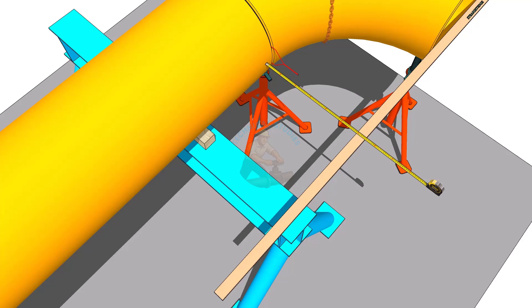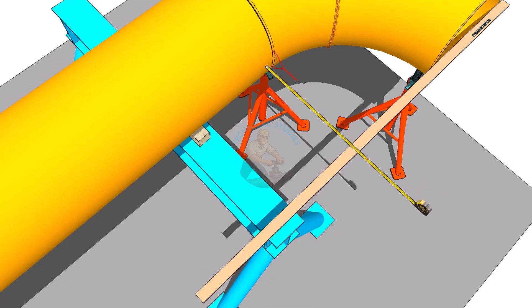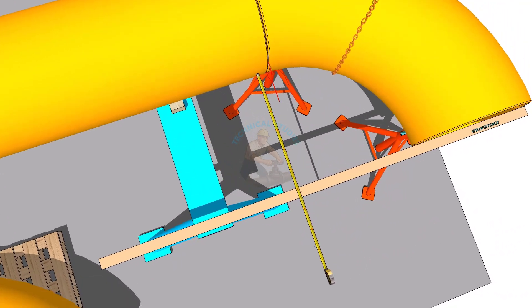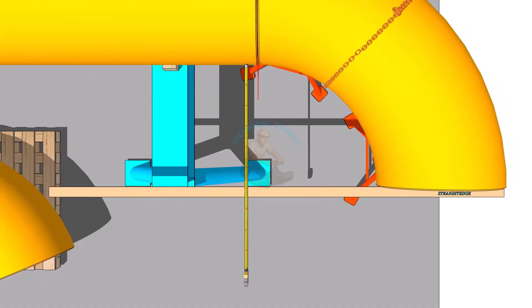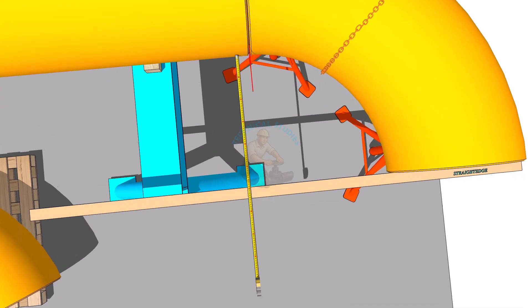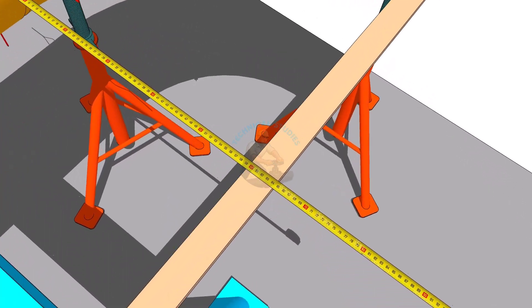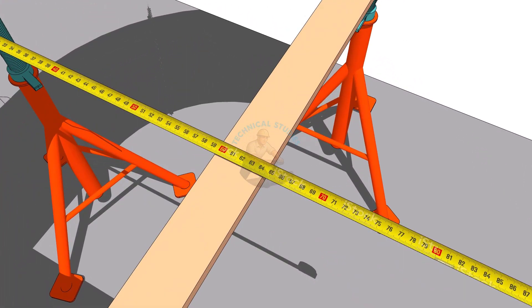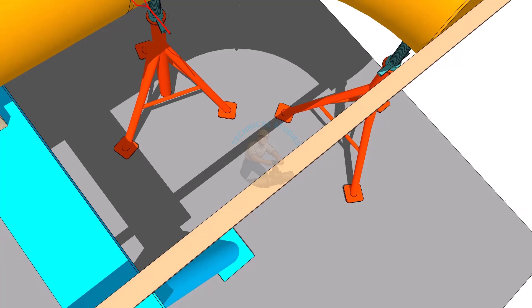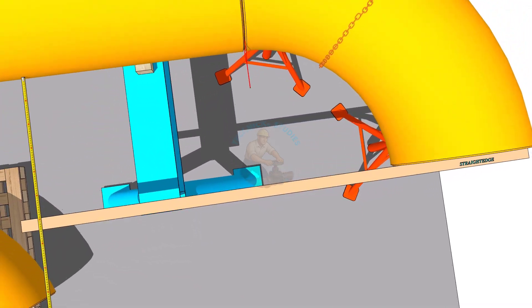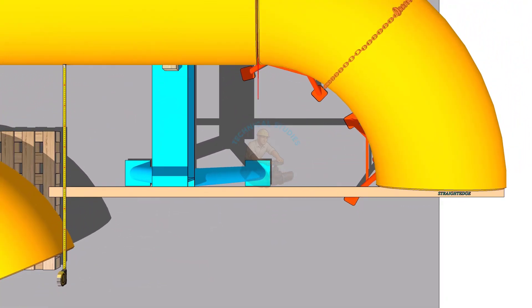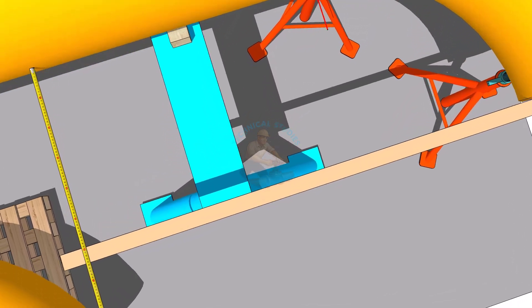Check the distance between the straight edge and the pipe side at two locations as shown. If both dimensions are not the same, rotate the elbow slightly to equal the measurements.